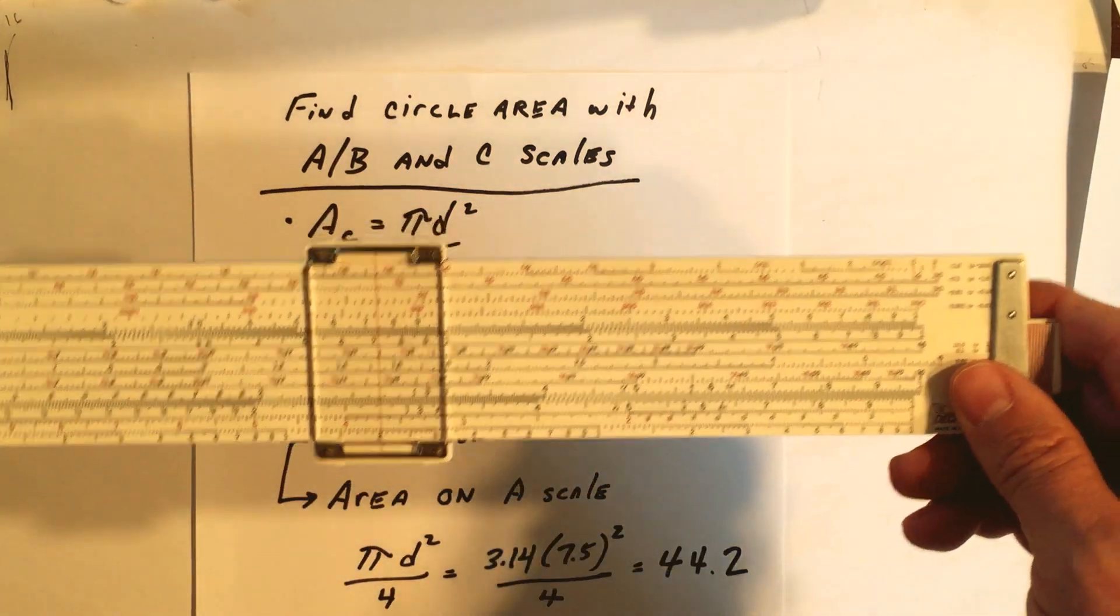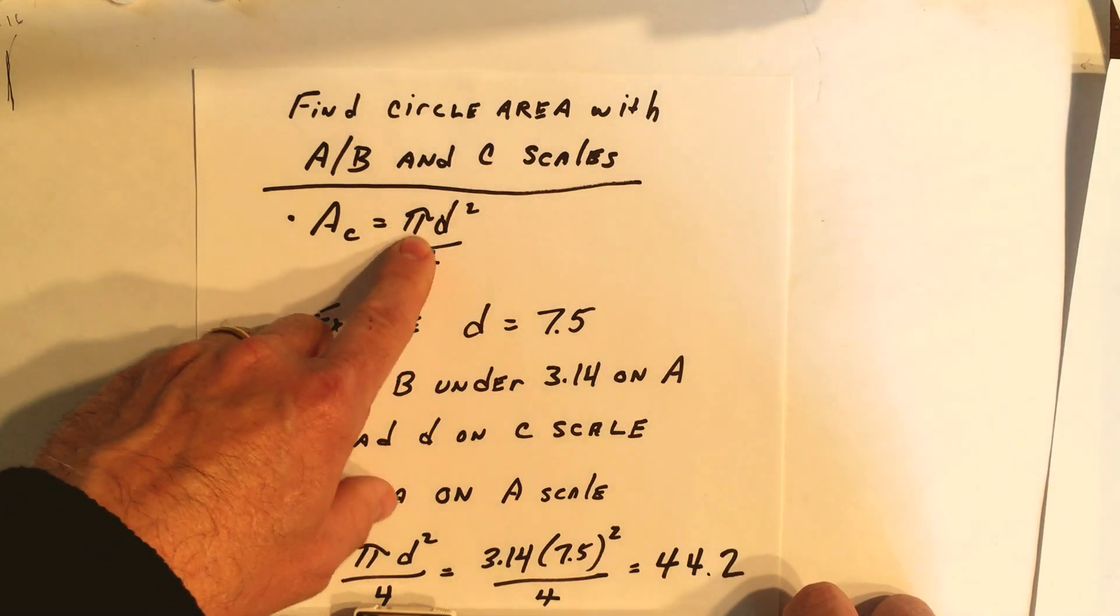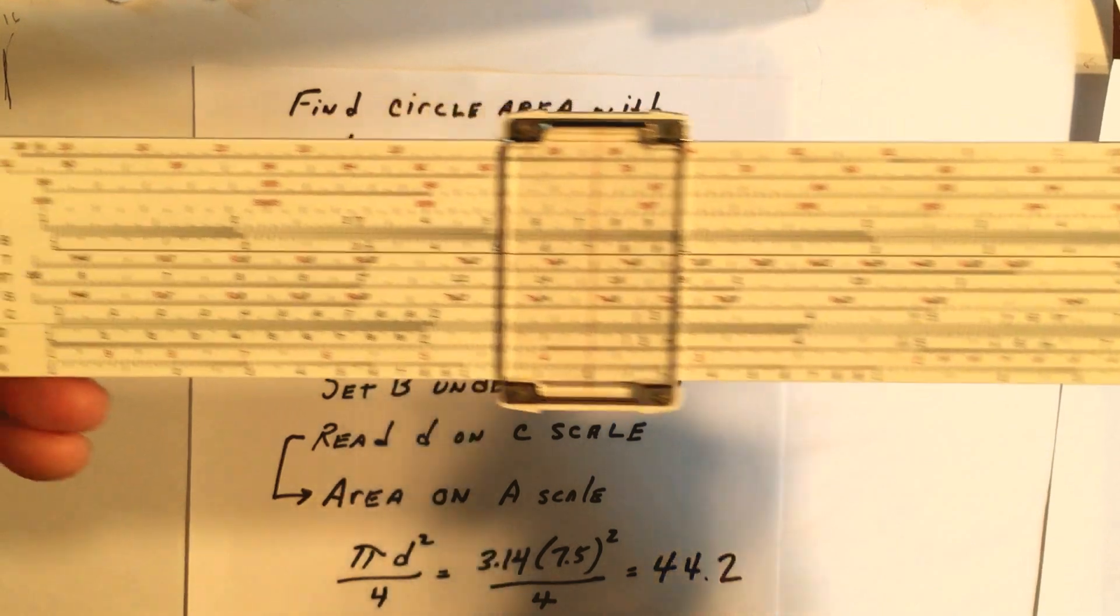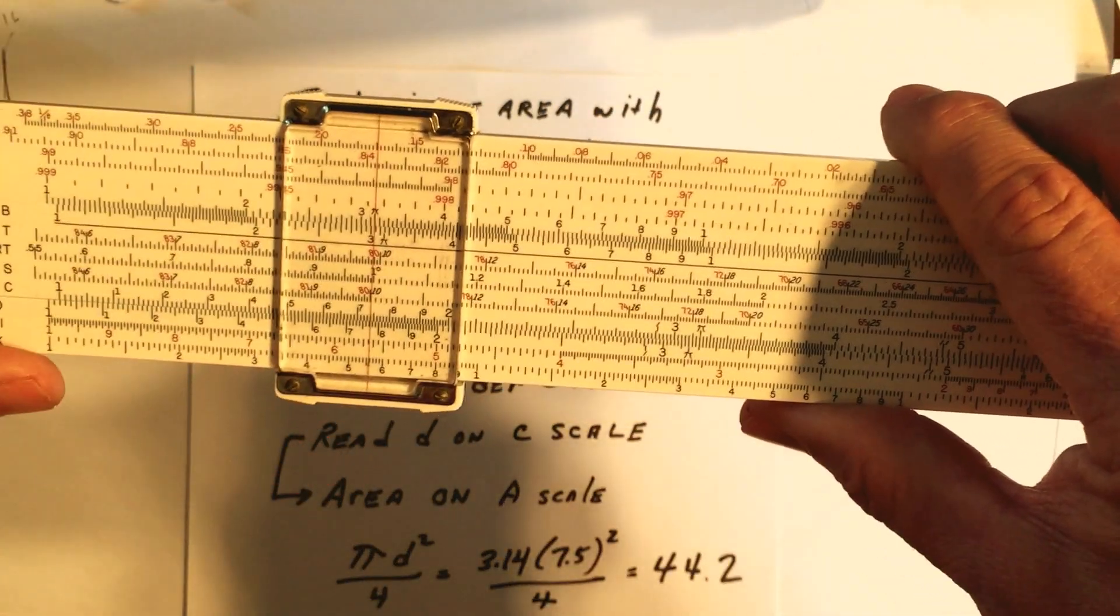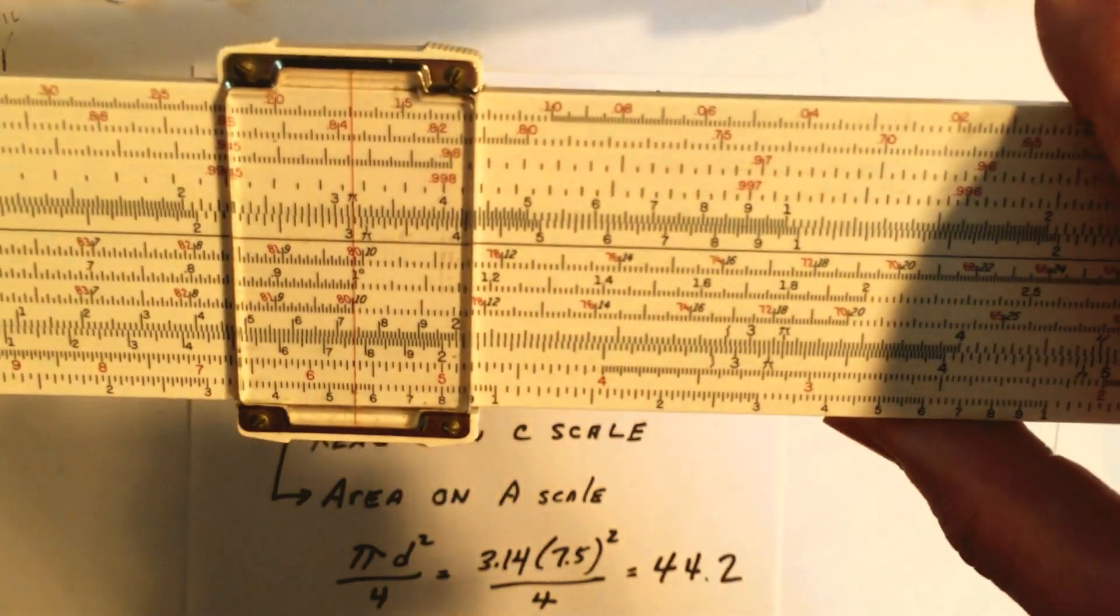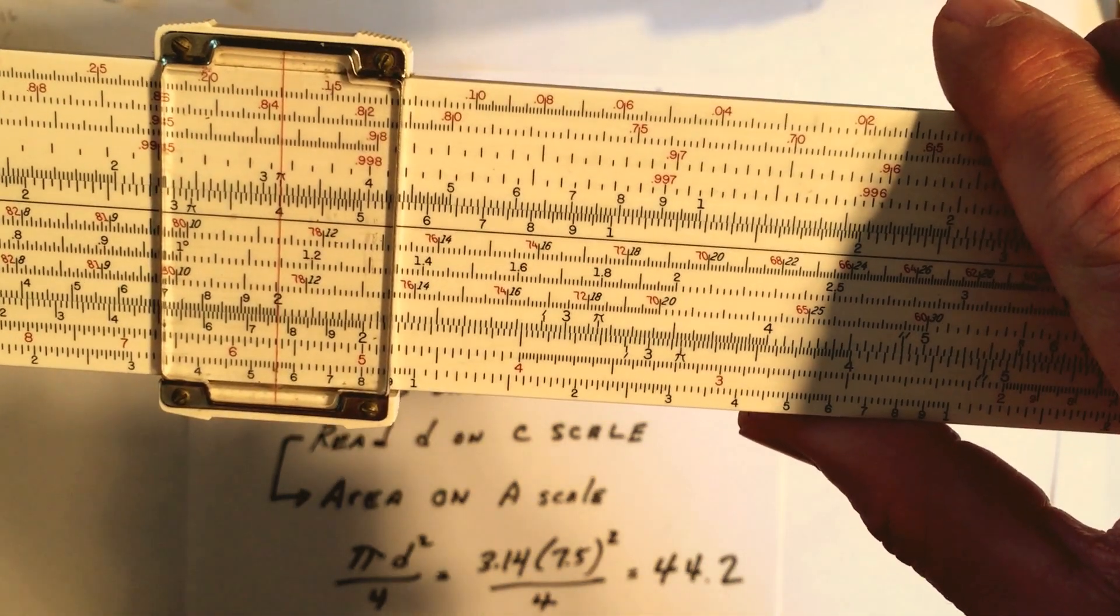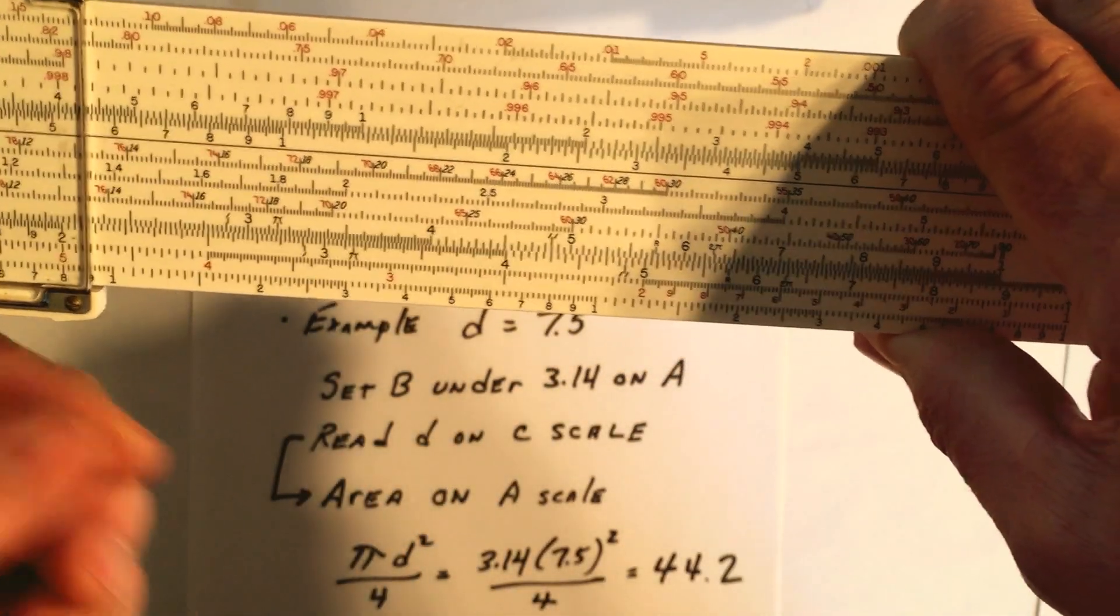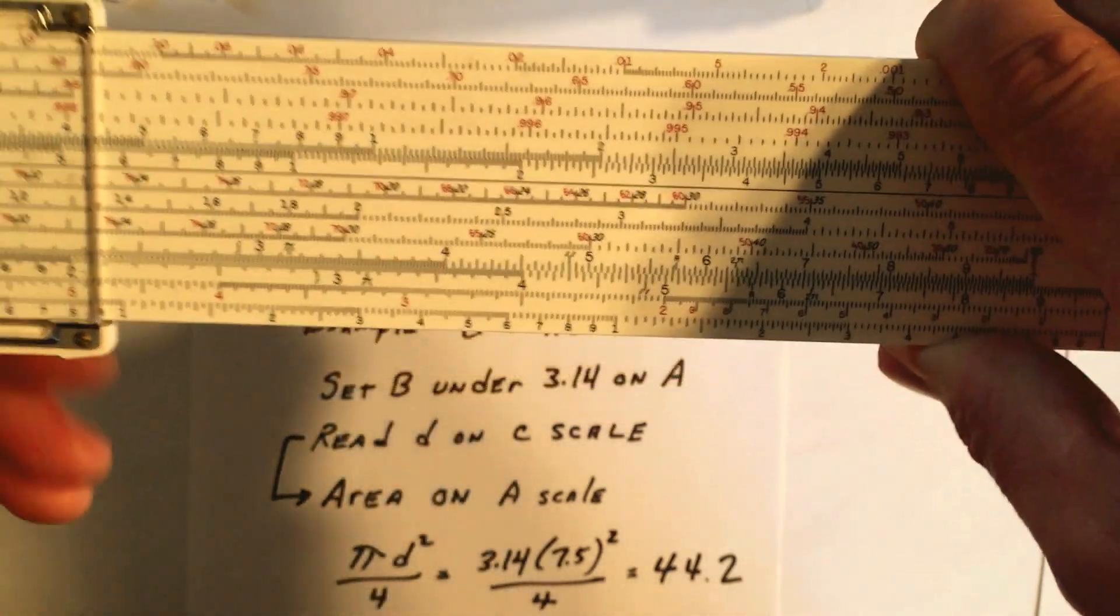Likewise one could still use the A and B scale. This is a trick that's on all slide rules, but you can flip it over and use the diameter now instead of the radius, which is pi d squared over 4. So we have to account for this pi over 4 factor, and that can be done easily by just setting your cursor over A of pi divided by 4 on the B scale. Now we have pi divided by 4.